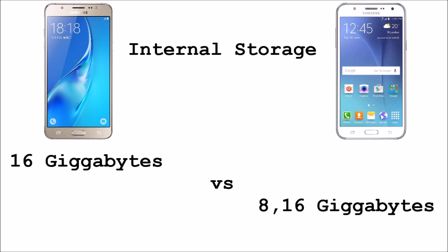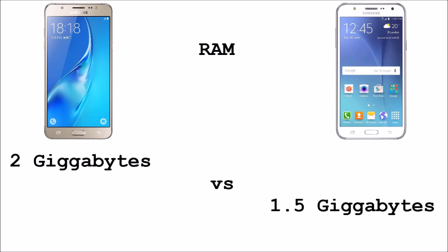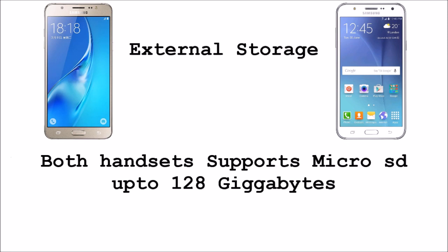Coming to the internal storage, the J5 2016 comes in a 16GB version while the J5 2015 comes in 16GB and 8GB versions. Coming to the RAM, the J5 2016 got 2GB of RAM while the J5 2015 got 1.5GB of RAM. As for external storage, both handsets can support a microSD card up to 128GB.